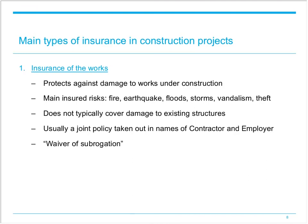Normally, works insurance takes the form of a joint insurance policy taken out in the names of both the contractor and employer. Generally, a payment to one co-insured will not entitle the insurer to subrogate against another co-insured. This means that if damage occurs which is the responsibility of one co-insured, the insurer cannot sue that party for the damage because the policy was also for their benefit. Issues relating to subrogation will be the focus of our case studies later in this webinar.